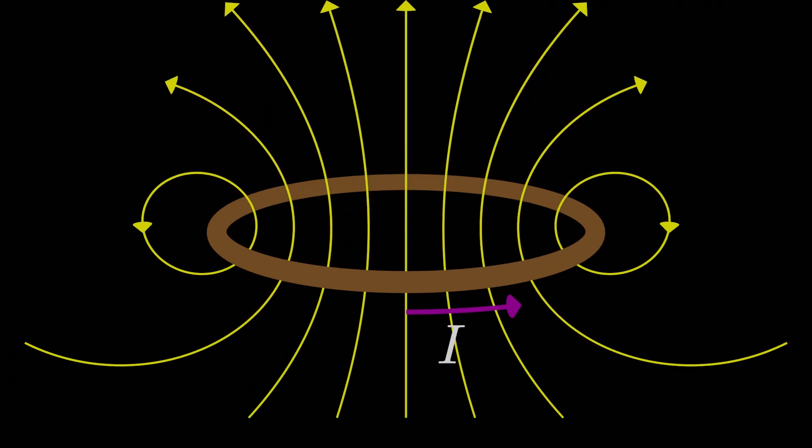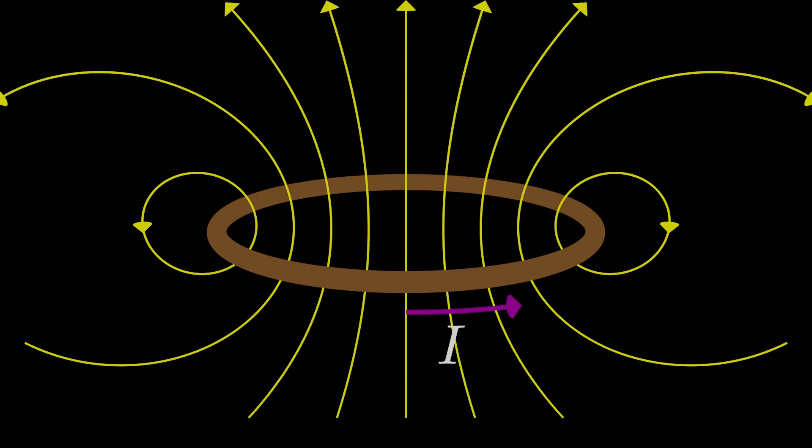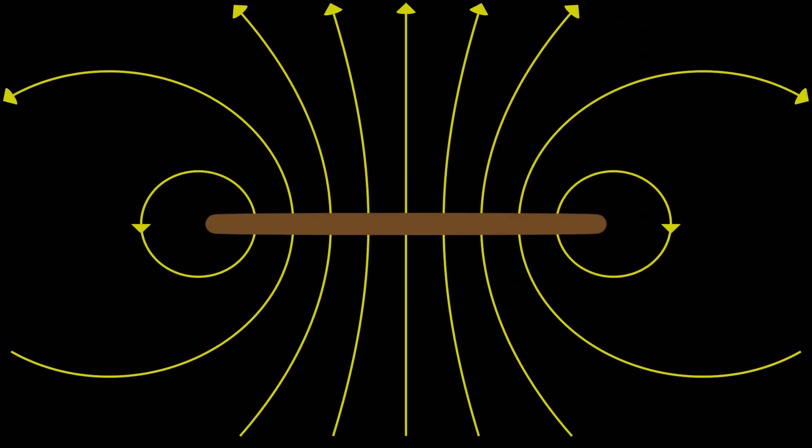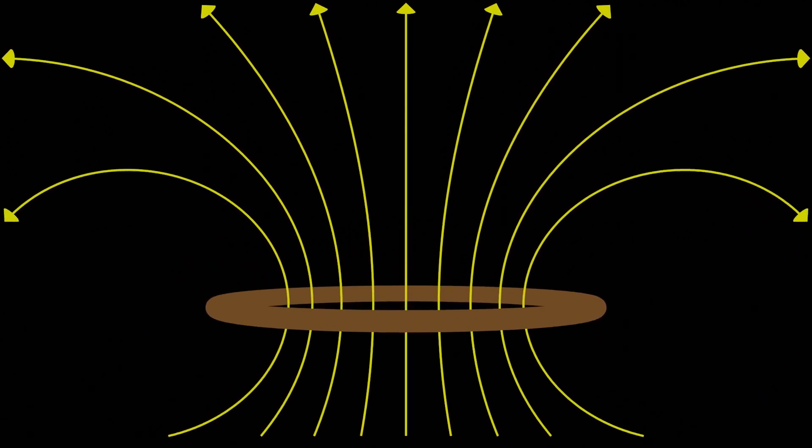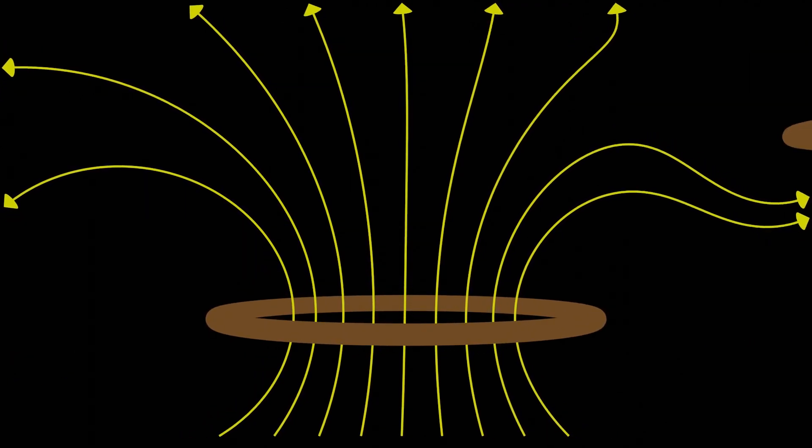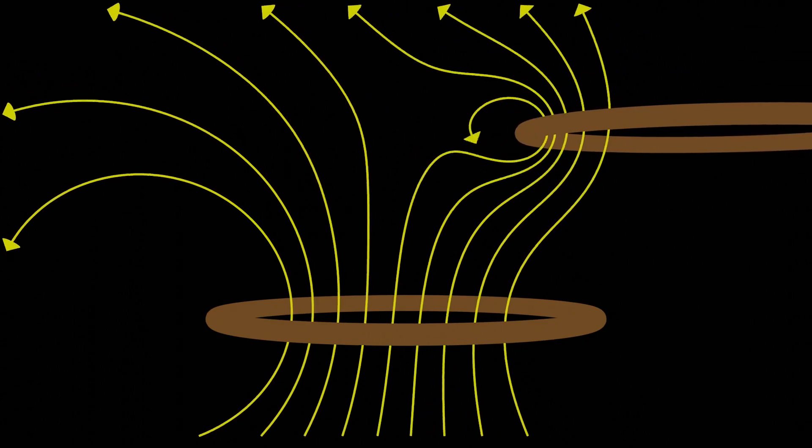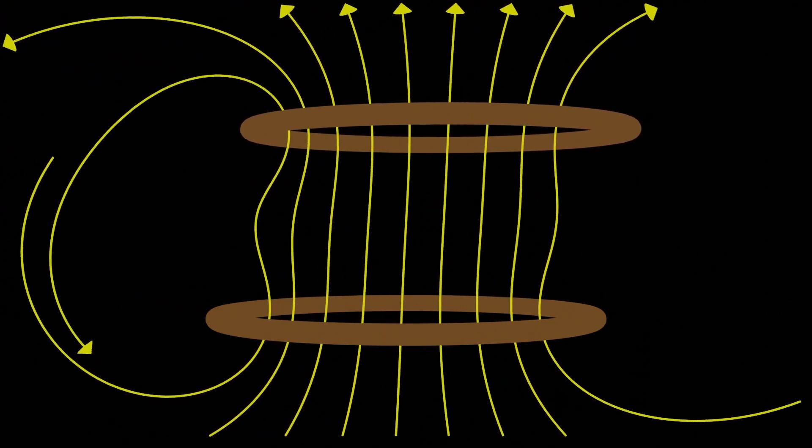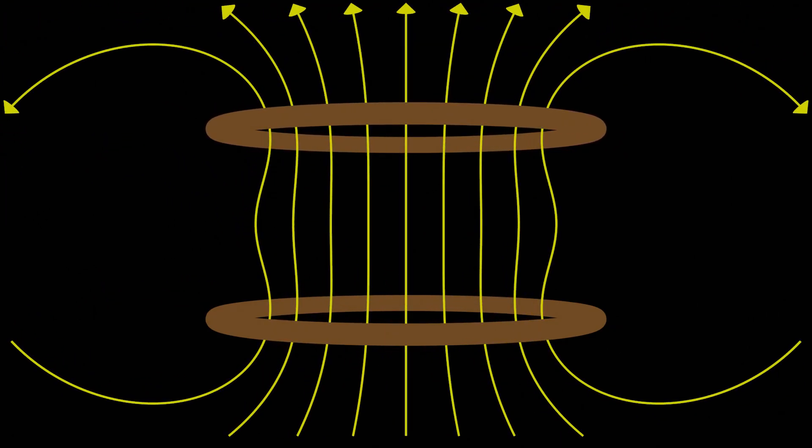Now, instead of one current loop, what if we have two stacked on top of each other? How do the magnetic field lines change? They change sort of like this. It's hard to describe in words, but you see it on the screen here. One thing we can note is the region enclosed by the loops has magnetic field lines that are a bit more vertical now. They're pointing a bit more in the up direction.